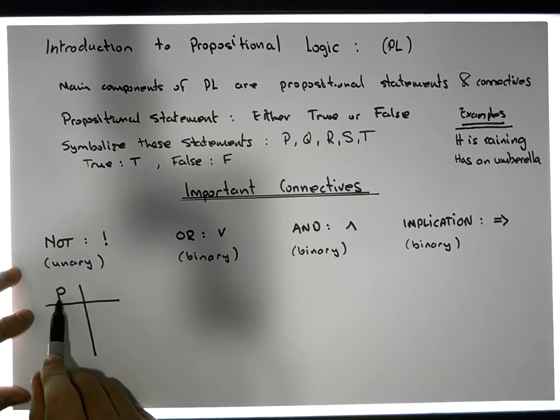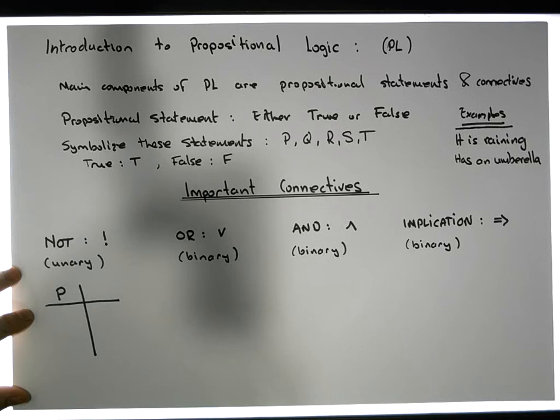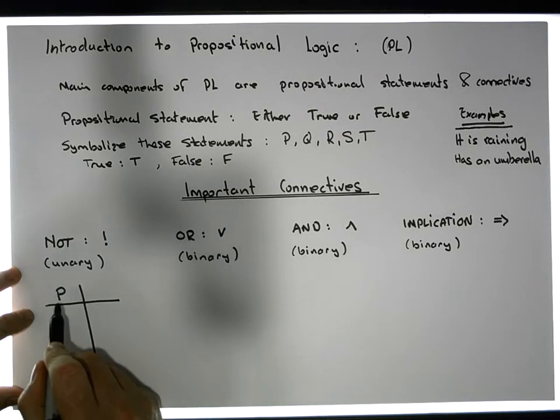Now, what we list down under this particular proposition is all the truth values that it can actually take on at any particular moment in time. A proposition P could be any proposition.